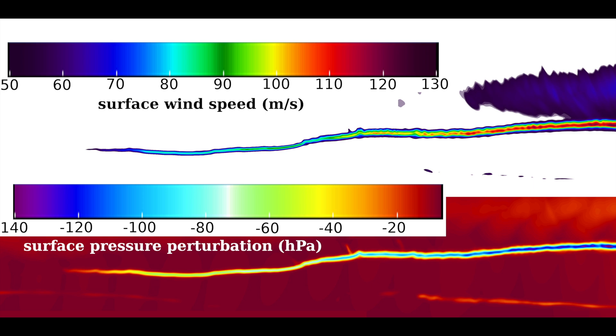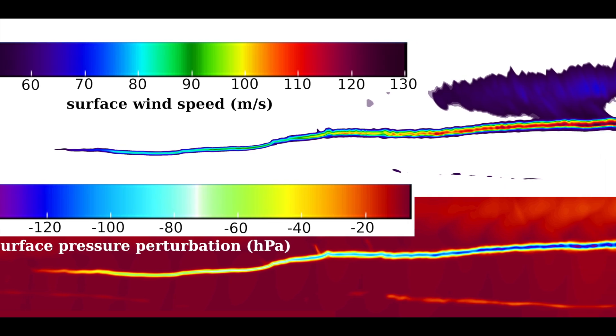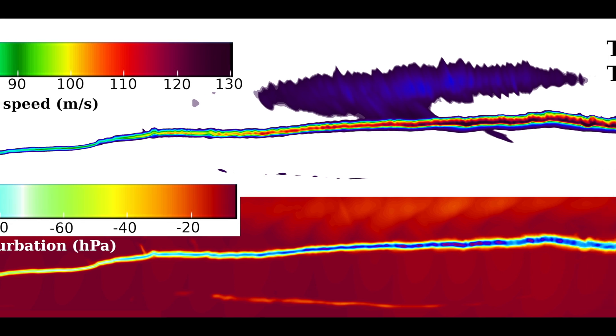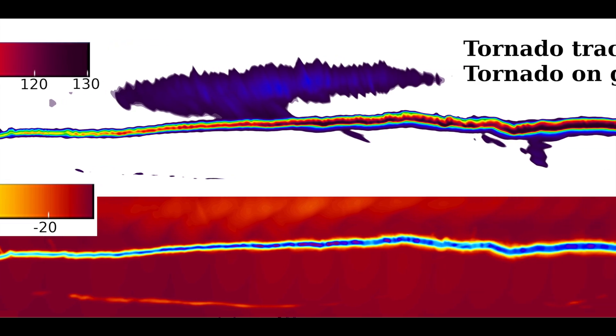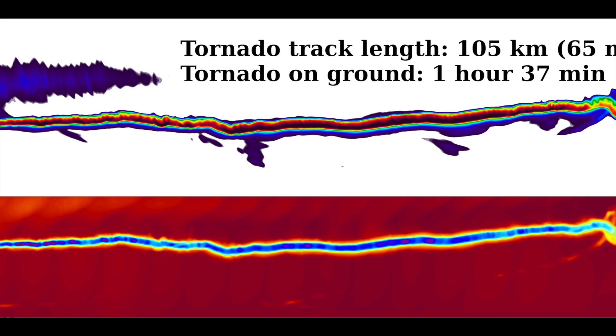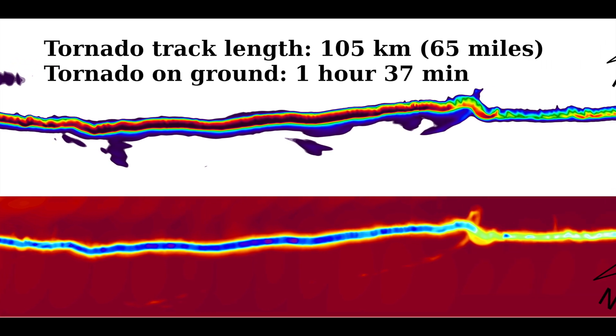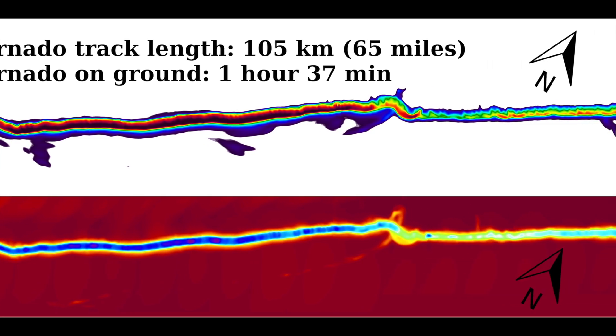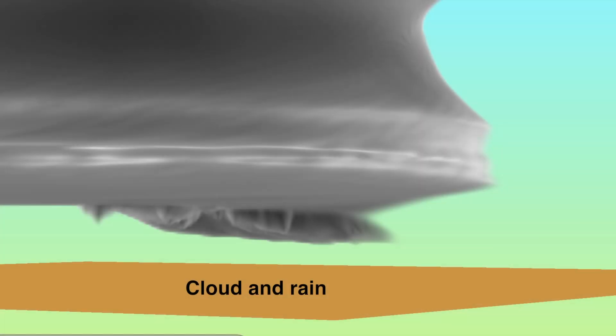The tornado's damage path is over 100 kilometers long. In this image, we show the tornado's path with the top track representing the surface wind speed and the bottom track representing the surface pressure deficit, highlighting the low pressure in the center of a tornado. The strongest winds in the tornado exceed 130 meters per second with the pressure drops exceeding 150 hectopascals.